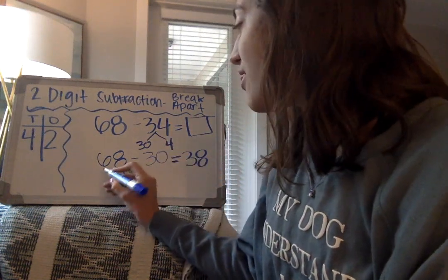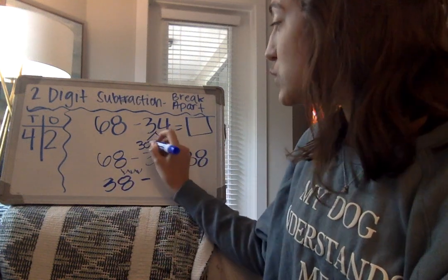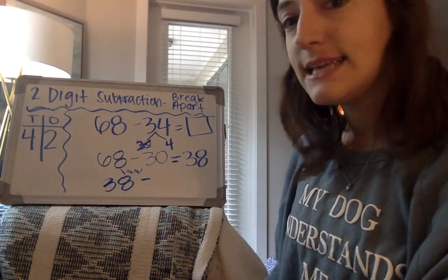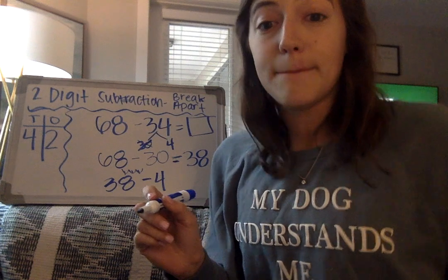So now I'm at 38 and I have to subtract my ones. So I've already subtracted my tens and now I have to subtract my ones. So now I'm at 38 minus 4. I have to take away 4 from 38.